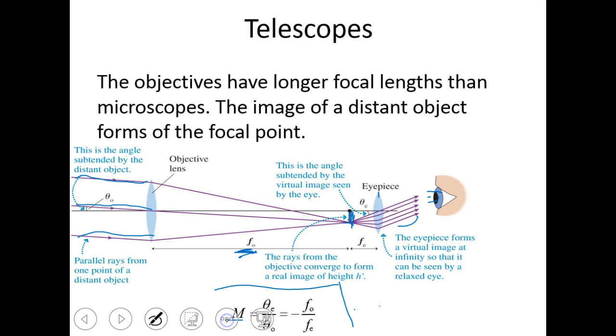The magnification of a telescope is equal to the theta of the eyepiece over the theta of the objective. Eyepiece and objective. Usually pretty small, but the more common is to look at them in terms of focal length. And so we do magnification is equal to the opposite of focal length of the objective over the focal length of the eyepiece.